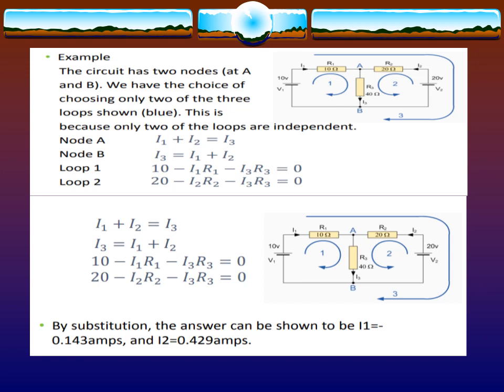By substitution, the answer can be shown that I1 equals minus 0.143 amperes, and I2 equals 0.429 amperes.